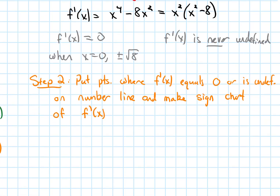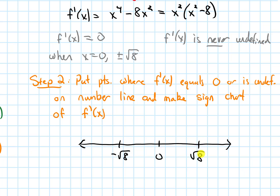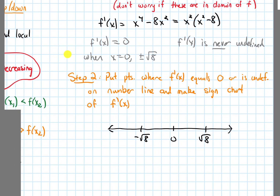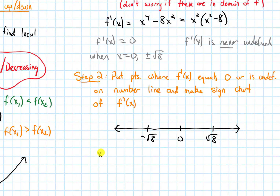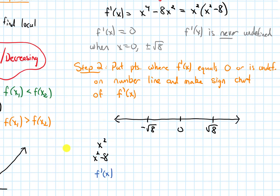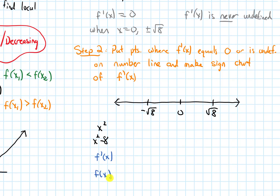So let's draw a number line. On the number line, I've got to put the values that made the derivative 0 or undefined: negative root 8, 0, and positive root 8. I'm going to put all the factors of my derivative as rows in this number line — a row for x squared, a row for x squared minus 8, and then a row for the sign of the whole derivative. I'm also going to have a row for the original function to track whether it's increasing or decreasing.